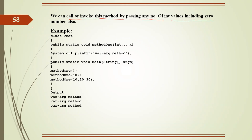We can declare a varargs method like this: public static void methodOne(int... x). We can call or invoke this method by passing any number of int values, including zero. The three dots (…) are compulsory — using fewer or more dots is not accepted.